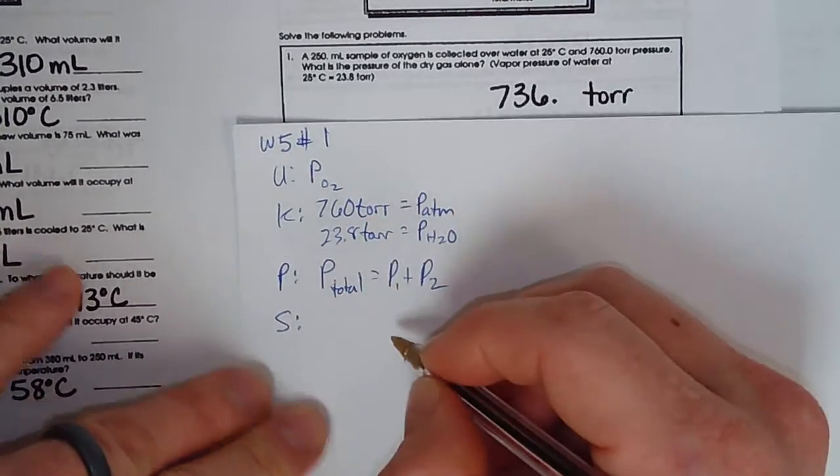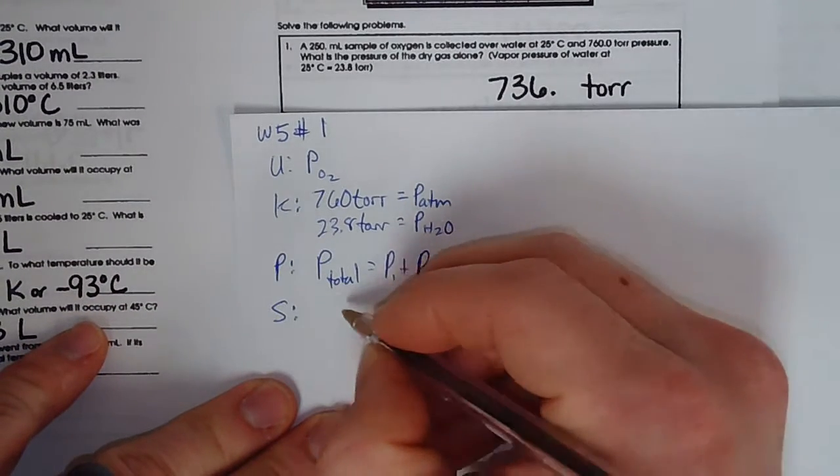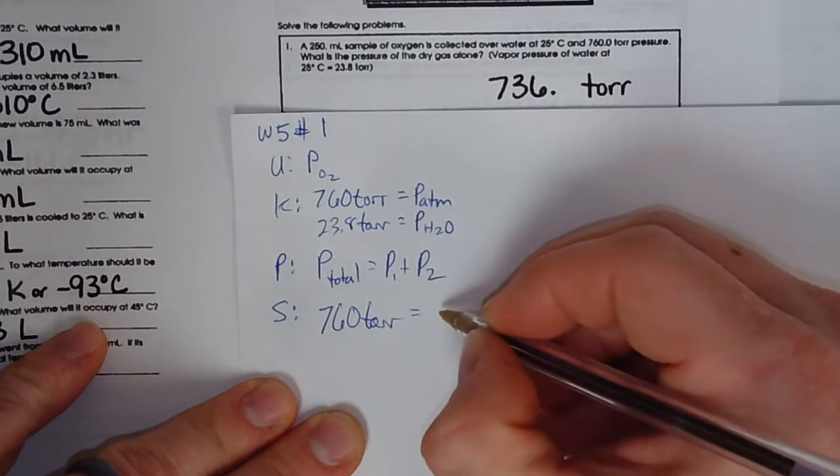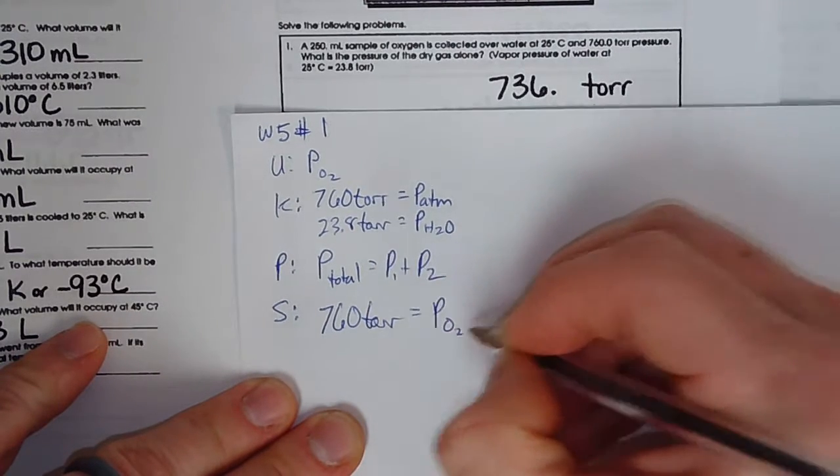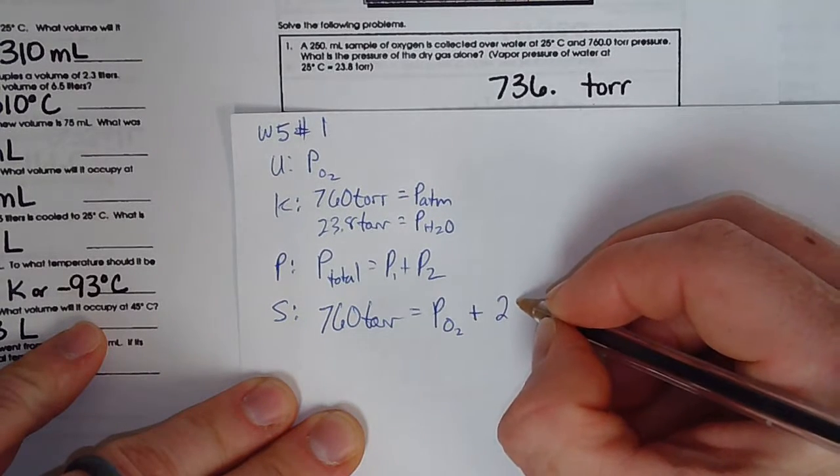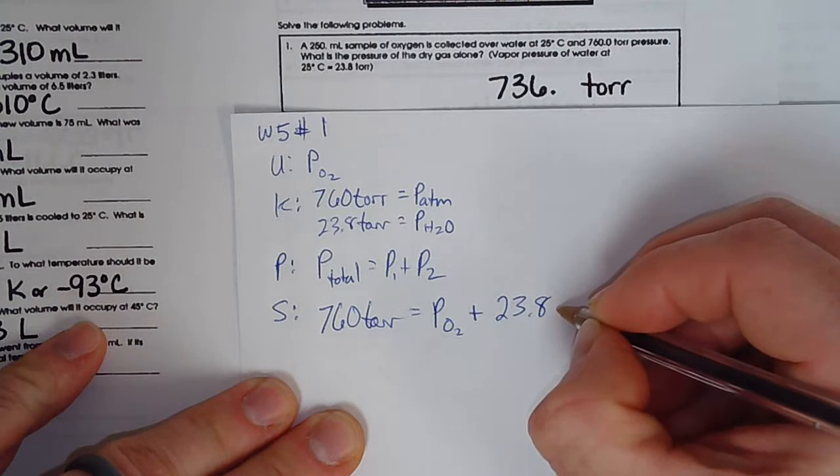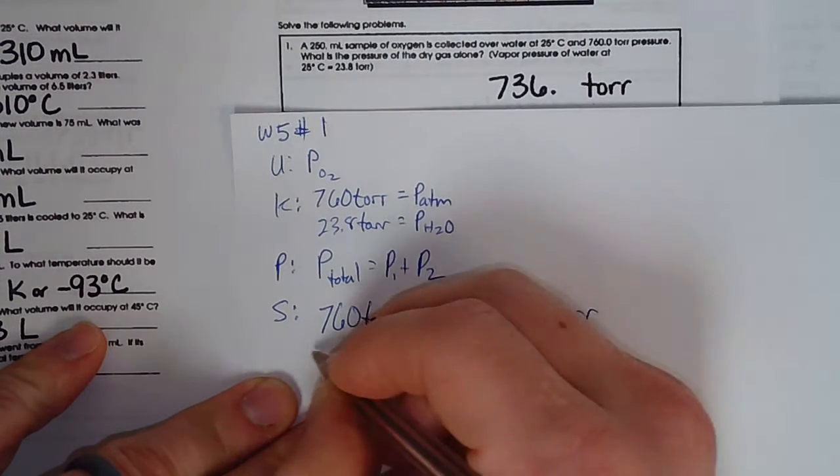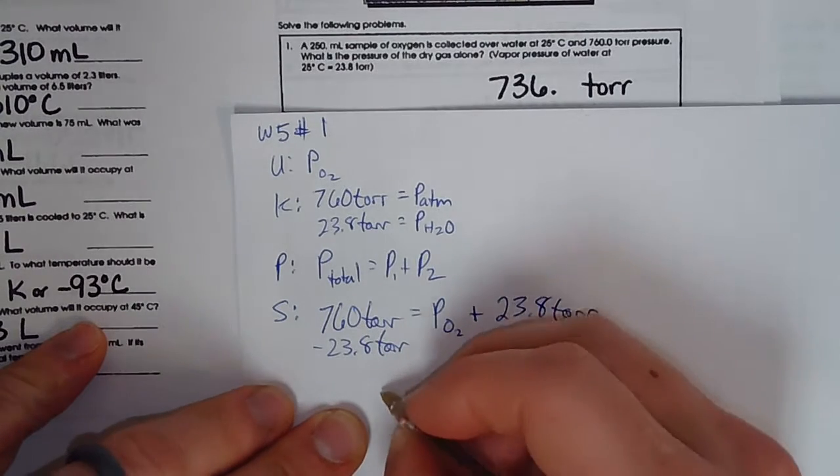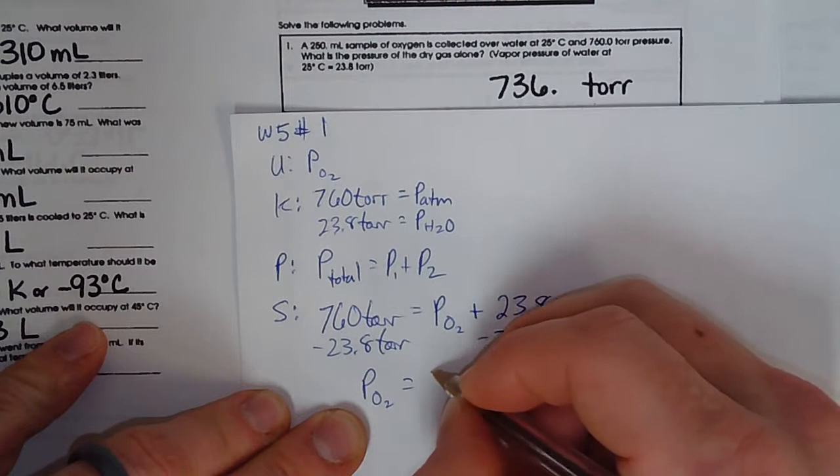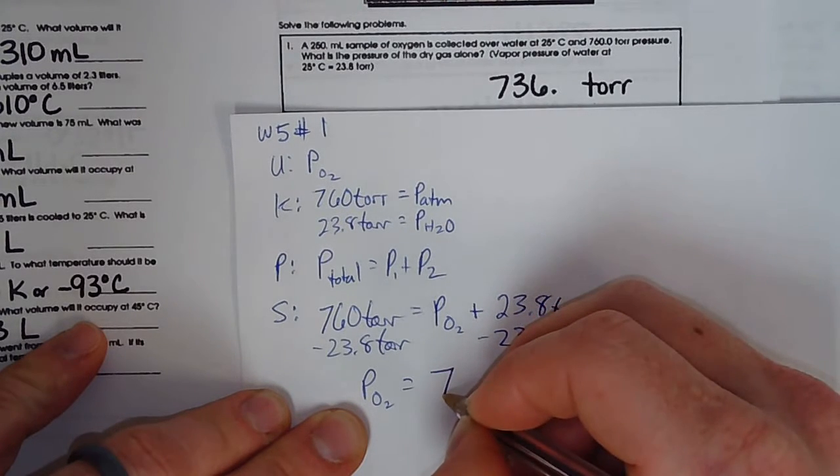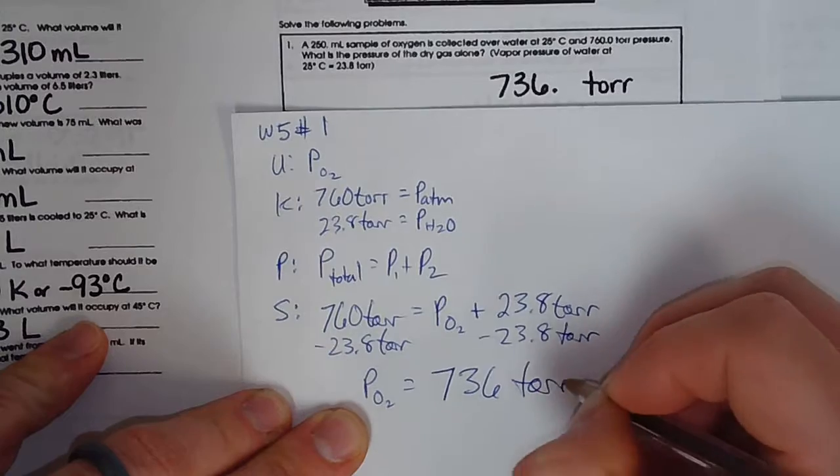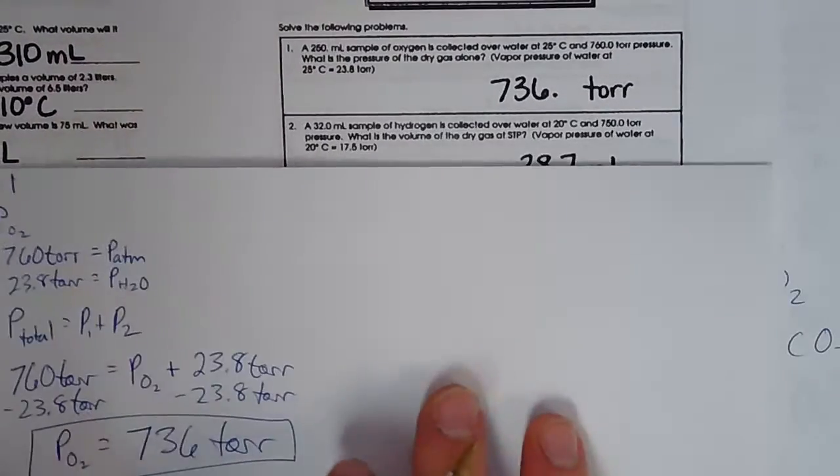So the plan is we're going to use Dalton's Law of Partial Pressures. And then the solve, we will take the total pressure, which is the atmospheric pressure, and then the oxygen pressure we don't know, and the 23.8 is the vapor pressure of water. And then simply subtract from both sides. Let's solve for P O2. So P O2 is going to come out to be 736.2, which when rounded to the correct number of significant figures will be just 736. That was easy enough.